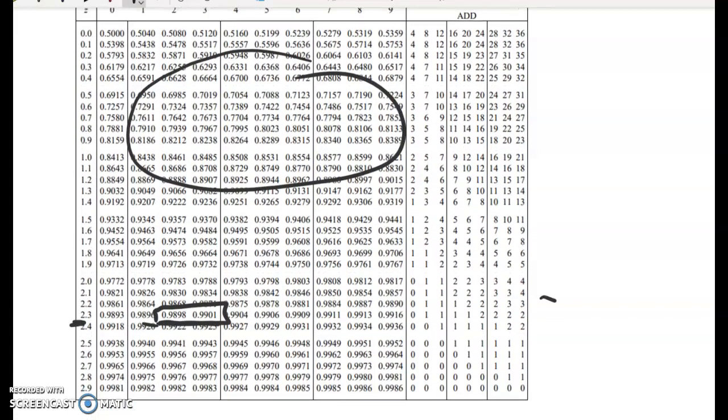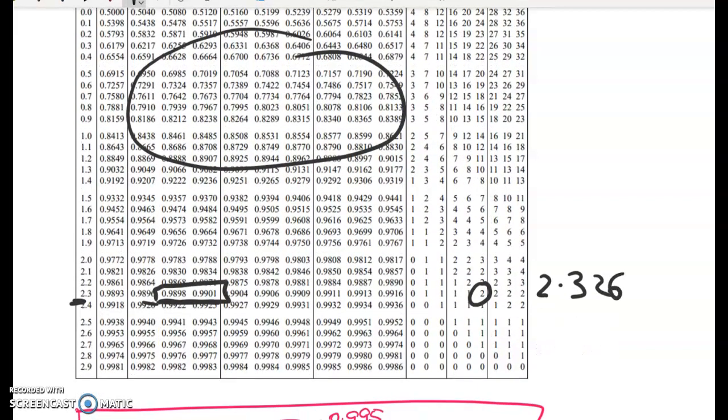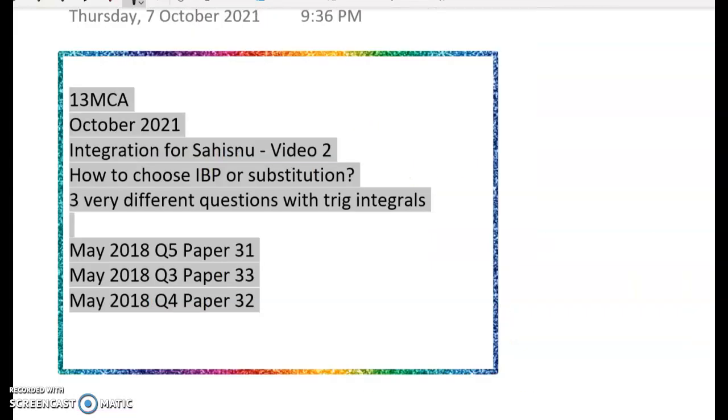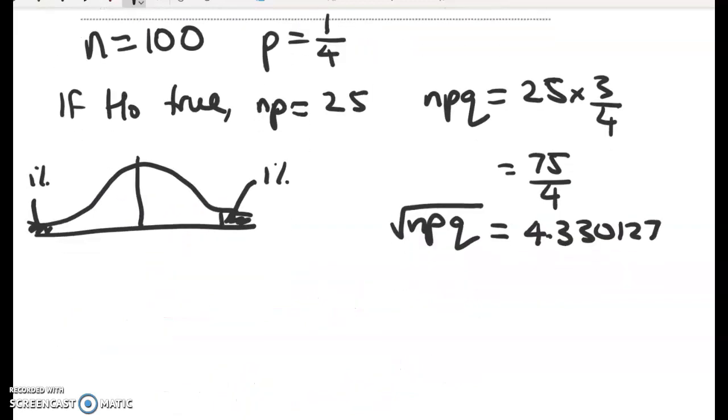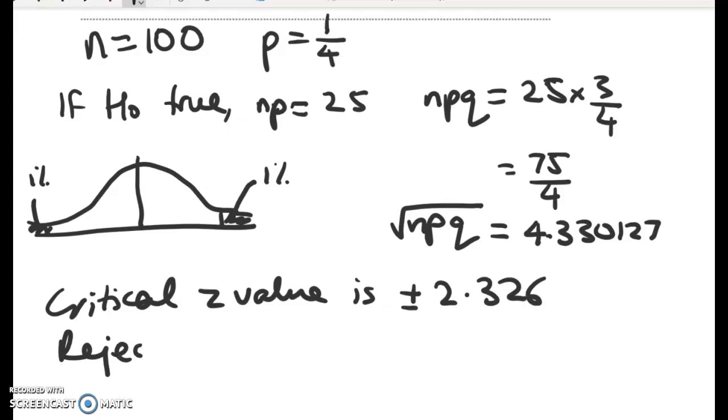So 2.32, and then we've got an add factor over here of 6. So 2.326, and it's going to be plus or minus that. Right, now I've got to find the question. Where's it going? Here we are. Okay, so critical values is plus or minus 2.326. So we will reject if Z is less than negative 2.326, or greater than 2.326.